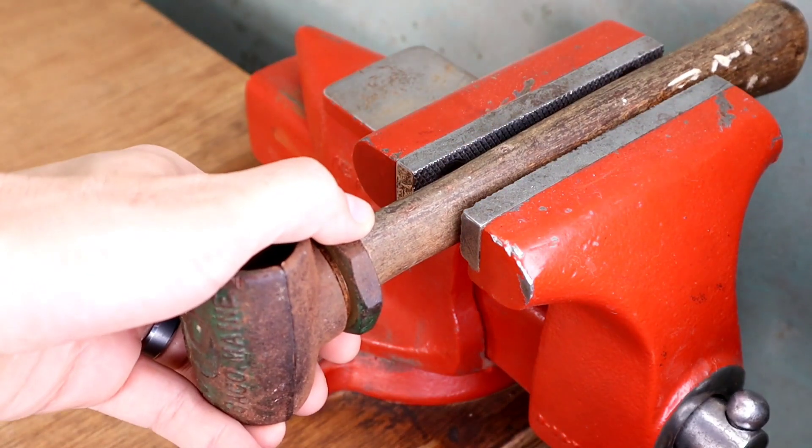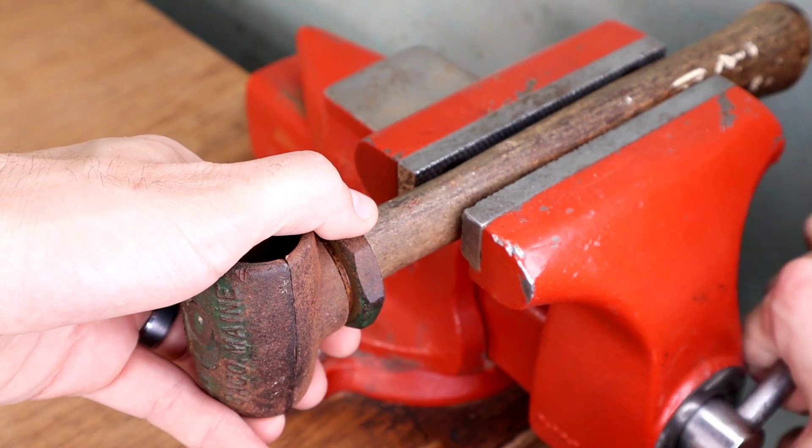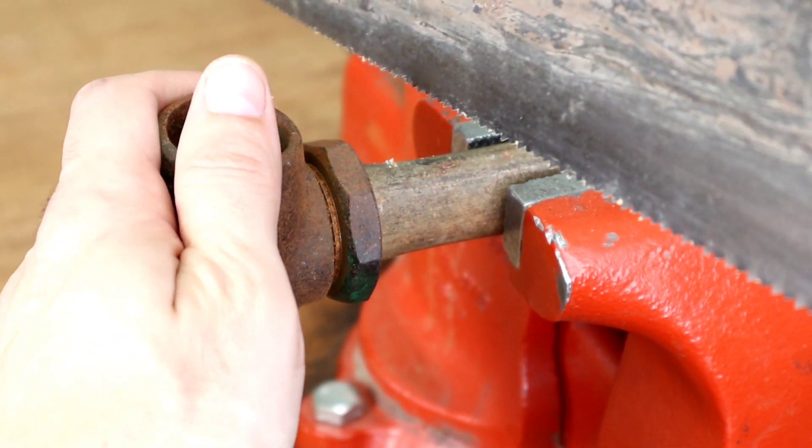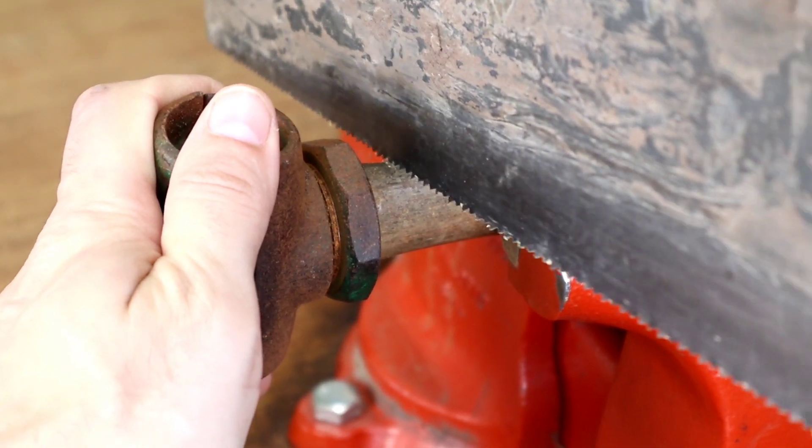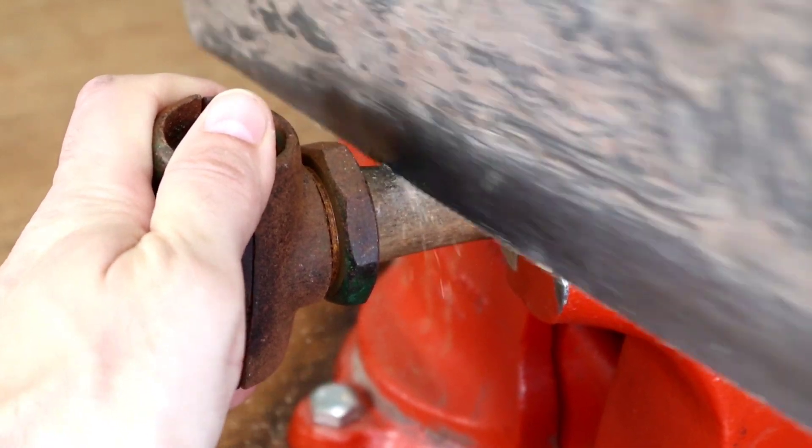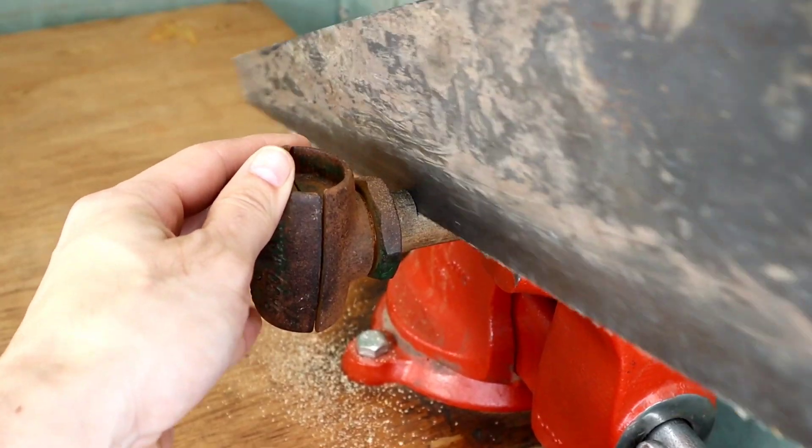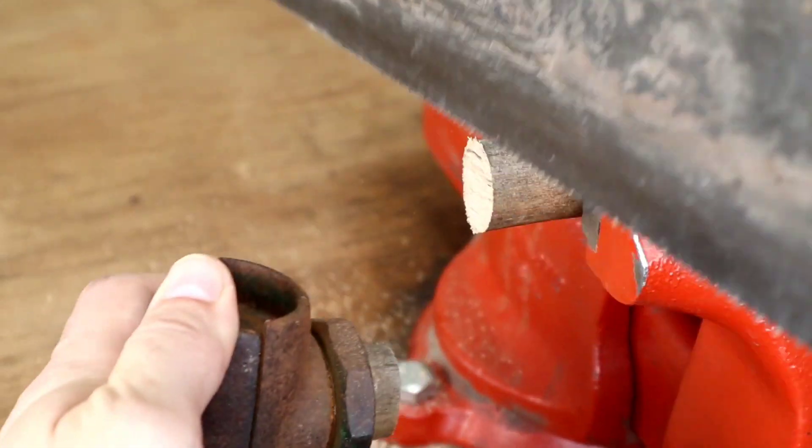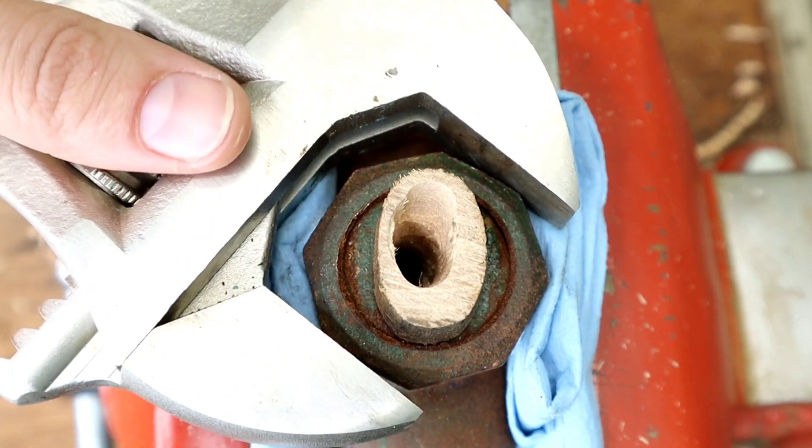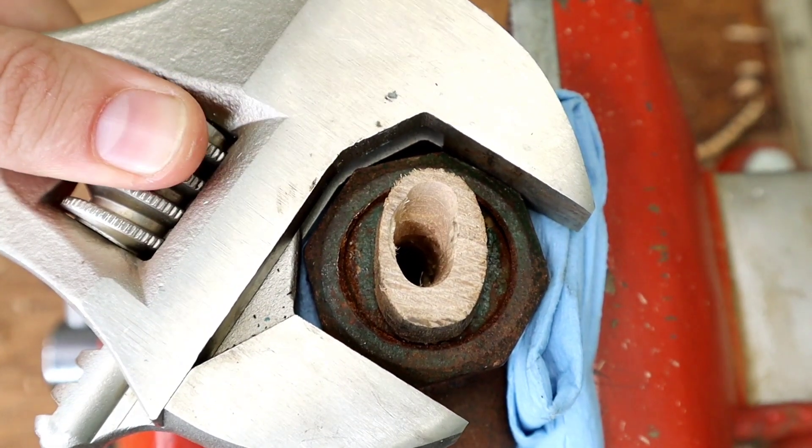The first thing we'll do is remove the handle from the jaws by cutting it off. This doesn't necessarily have to be done, but the short handle makes it much easier to manipulate in the vise. I used a regular cutting saw here that's primed and ready for its own restoration. To replace it, I searched for a 12-inch handle that could be cut down to size after installation.